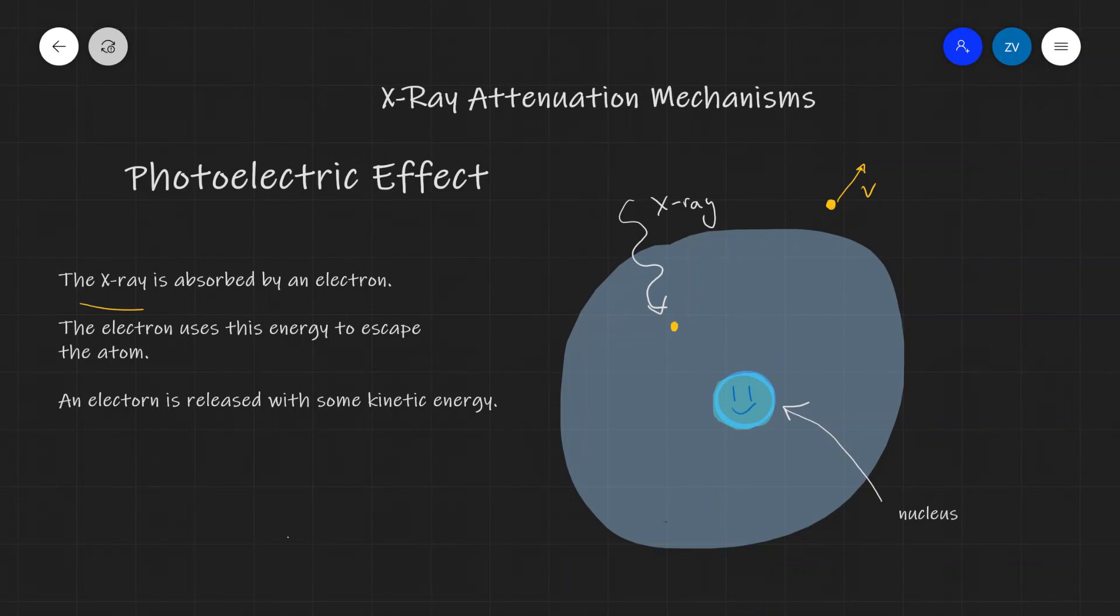Now during this event, once again the X-ray is absorbed and then the electron is released with some kinetic energy. Of course the X-ray has to have significantly high enough energy, it has to be higher than the work function for this to happen. Okay folks, so hopefully this makes sense. Let me know if there are any questions. Hope this online lesson on X-ray attenuation mechanisms was useful and good luck with your revision.